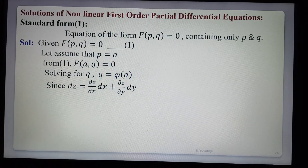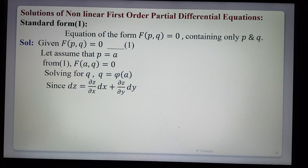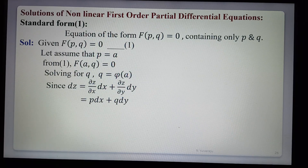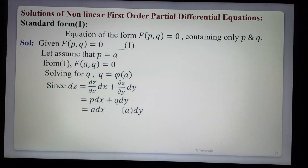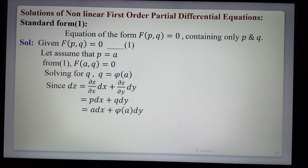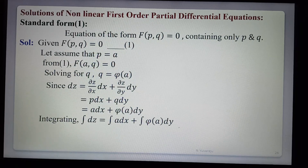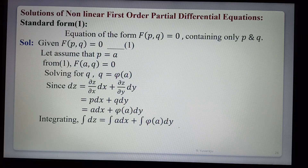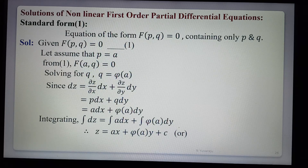Since dz = (∂z/∂x)dx + (∂z/∂y)dy by the total derivative, and ∂z/∂x = p and ∂z/∂y = q, we get dz = p dx + q dy. With p = a and q = φ(a), we integrate both sides: z = ax + φ(a)·y + c, where c is a constant. Both a and c are arbitrary constants.